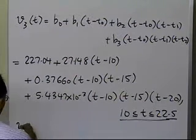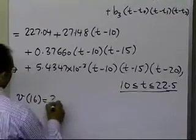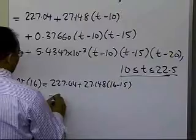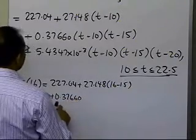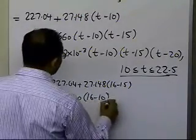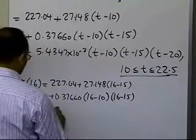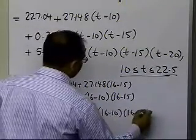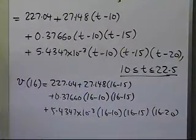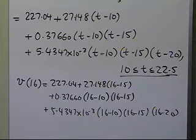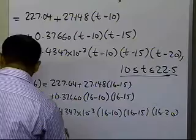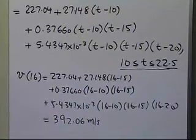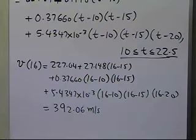We are interested in calculating the value of the velocity at t equals 16, so substituting 16: 227.04 plus 27.148 times (16 minus 10), plus 0.37660 times (16 minus 10) times (16 minus 15), plus 5.4347 times 10 to the power minus 3 times (16 minus 10)(16 minus 15)(16 minus 20). The result is 392.06 meters per second. That's how you use Newton's third order divided difference polynomial to calculate velocity at a given point.